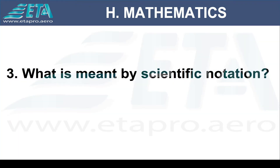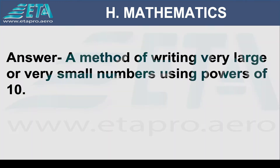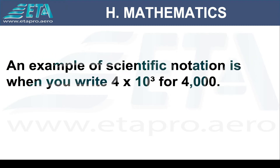What is meant by scientific notation? A method of writing very large or very small numbers using powers of 10. An example of scientific notation is when you write 4 times 10 to the third for 4,000.